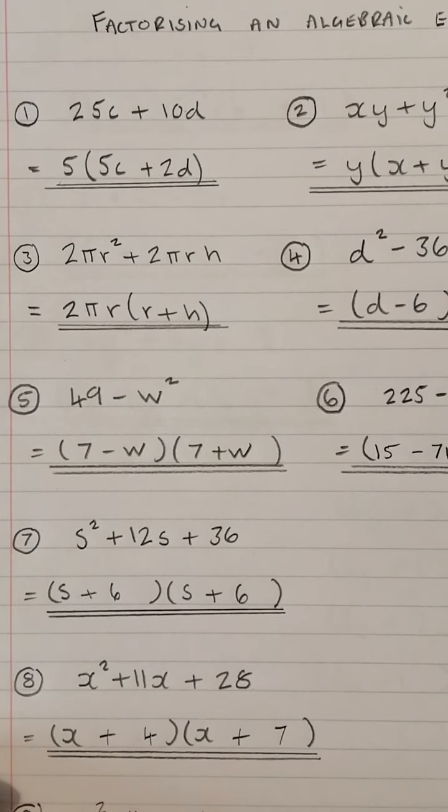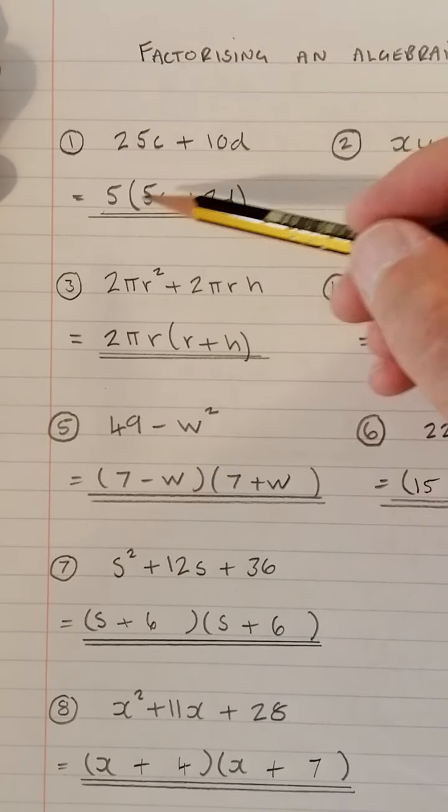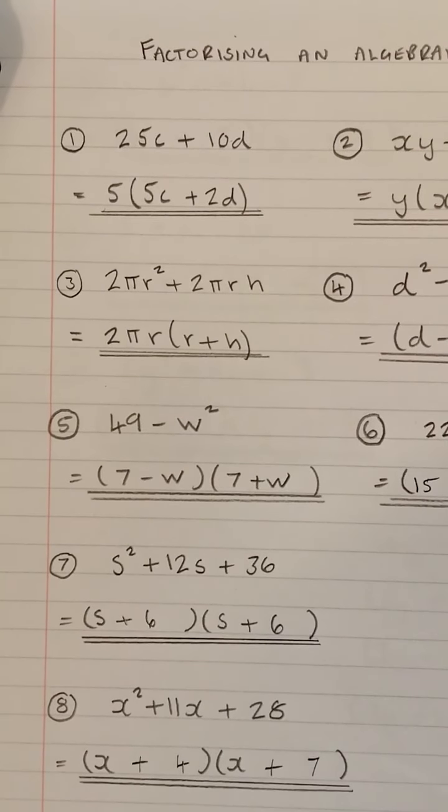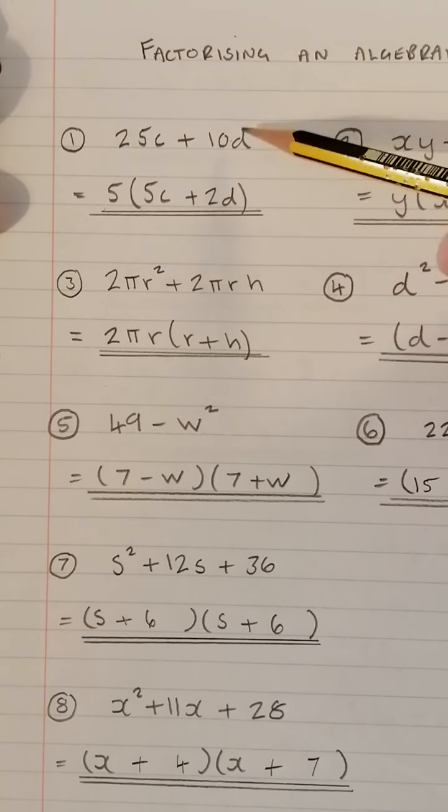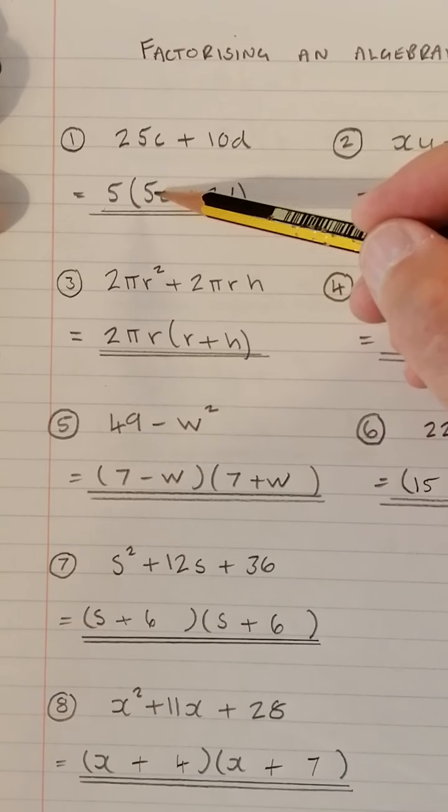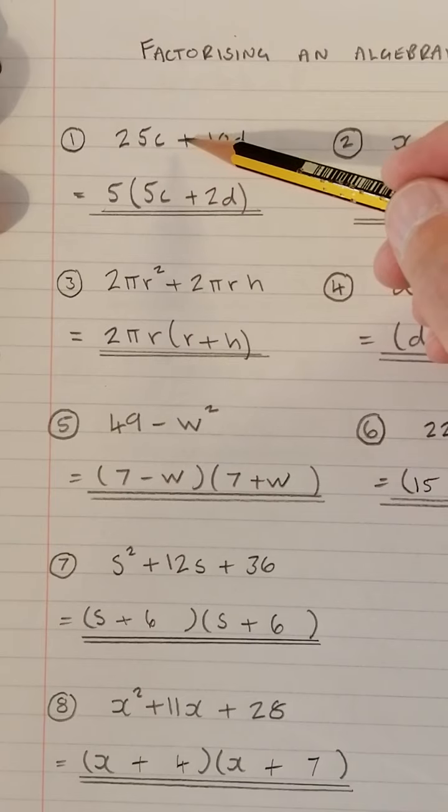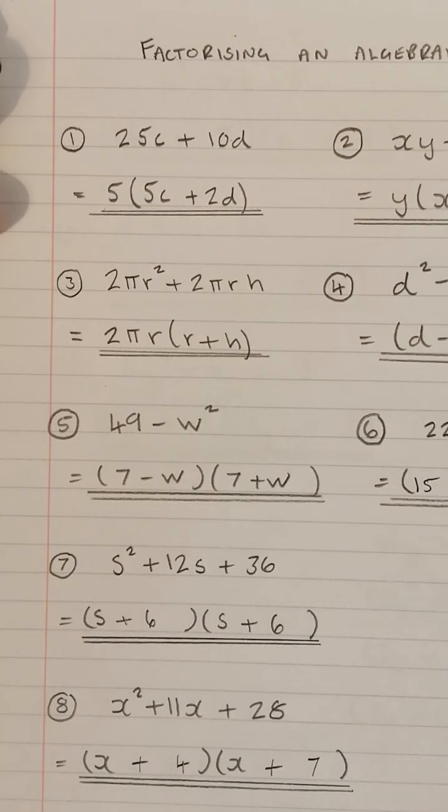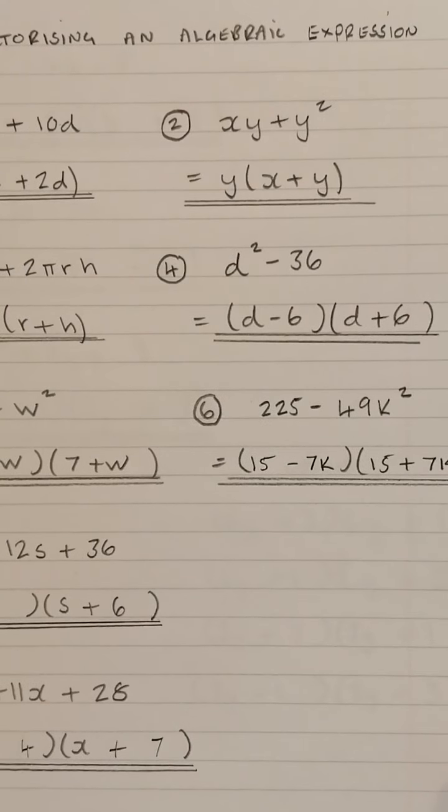The first few are common factors. 25C plus 10D. 5 comes out as a common factor, it's the highest common factor between 25 and 10. There's no letters we can take out because they're both different. So 5 comes out as a common factor. That times that has to give 25C, so that must be 5C. And that times that has to give 10D. So it's 5 times (5C + 2D). Let's have a look at number 2.